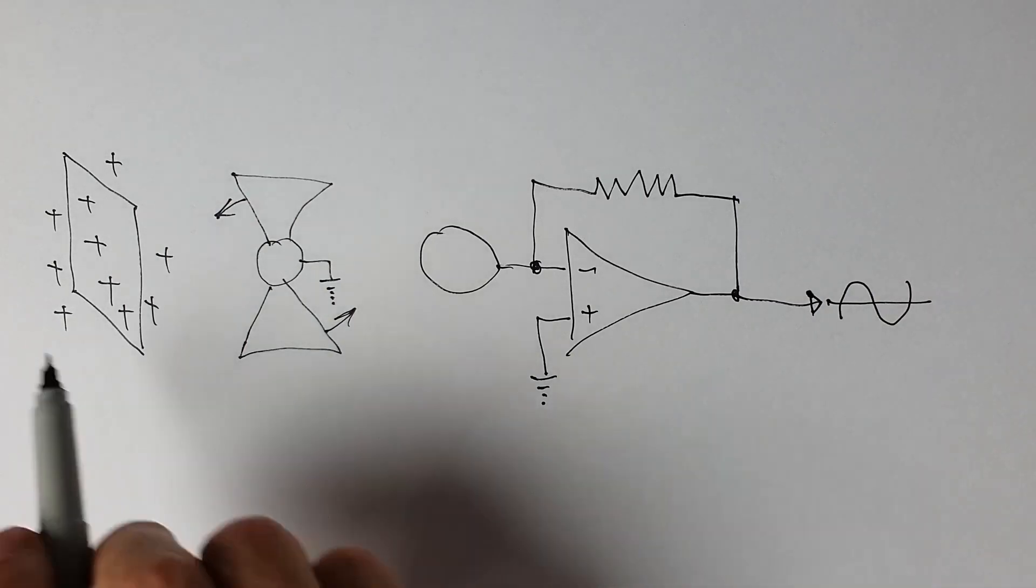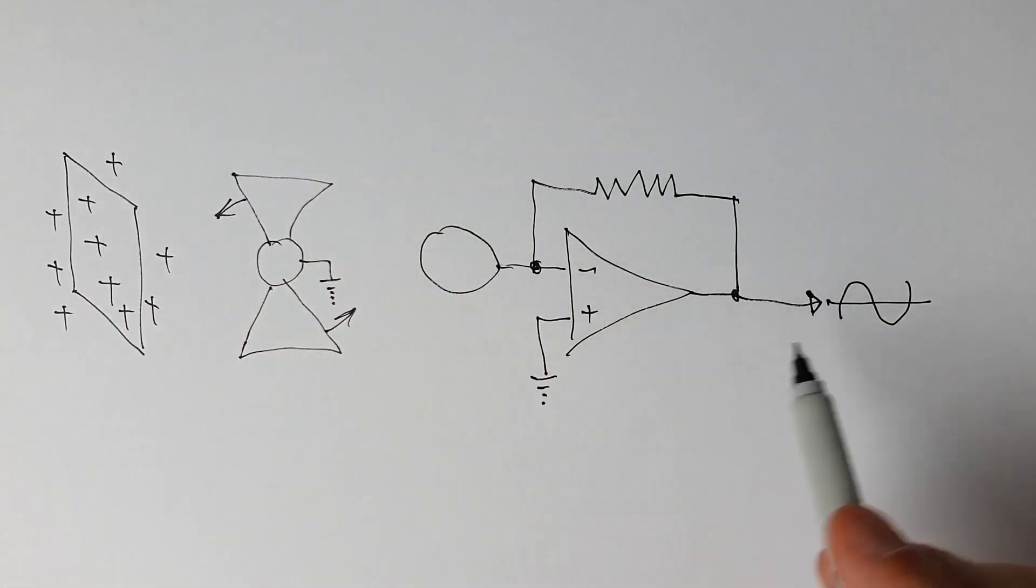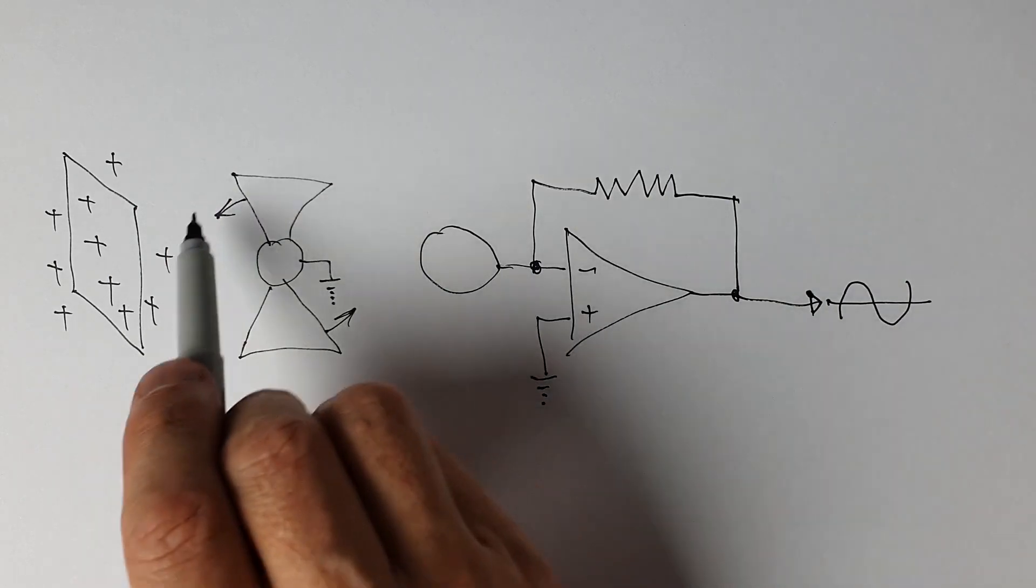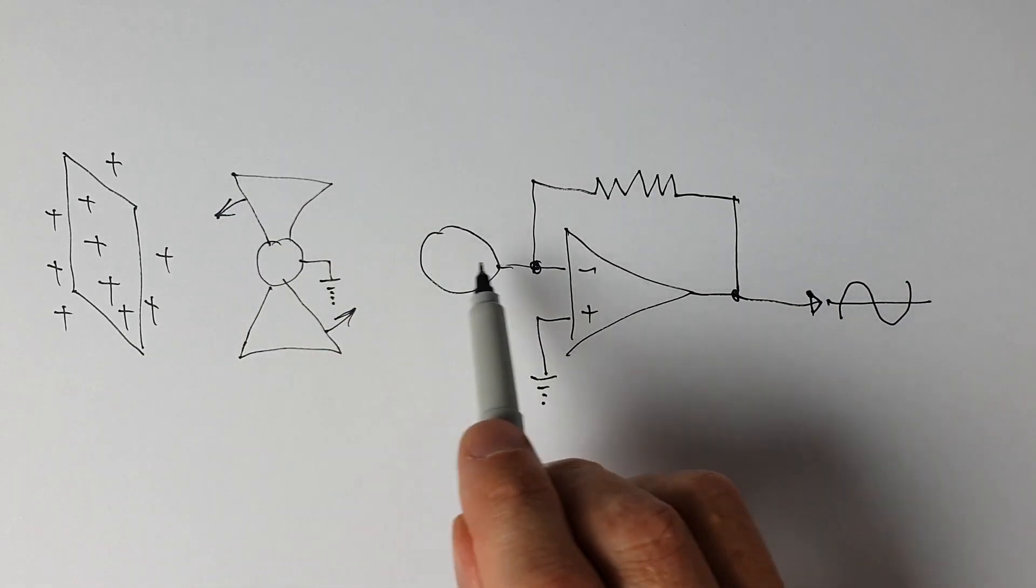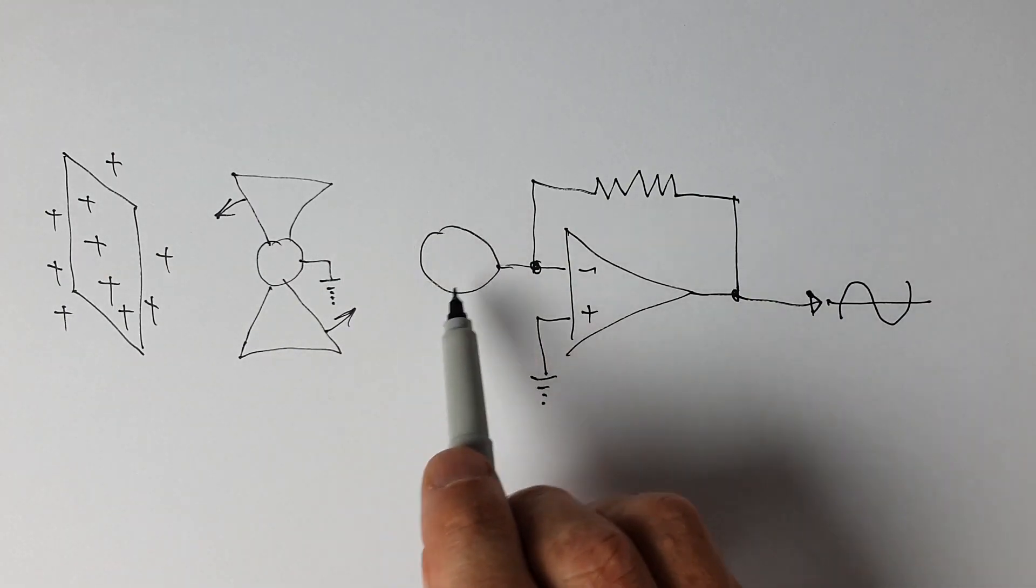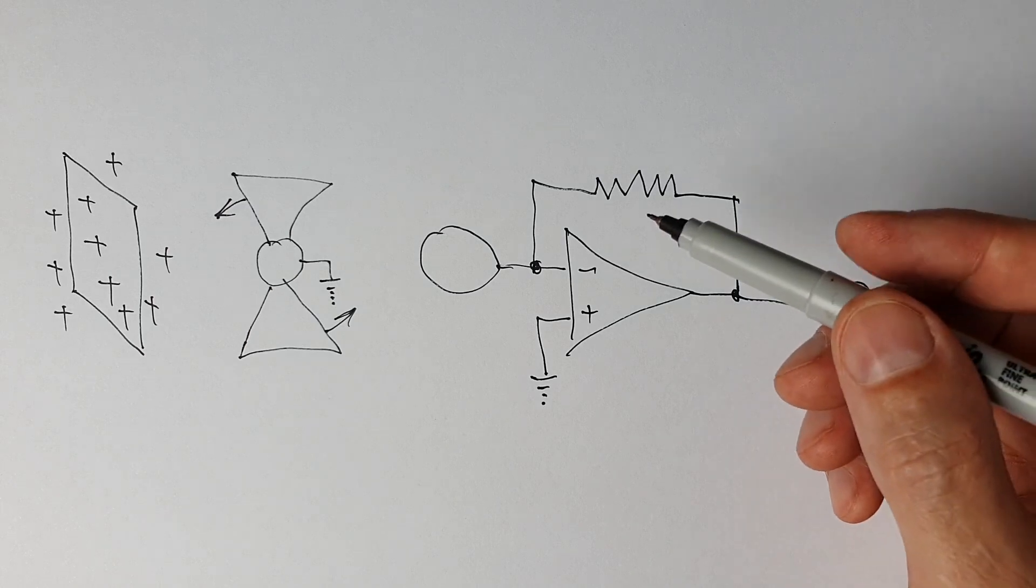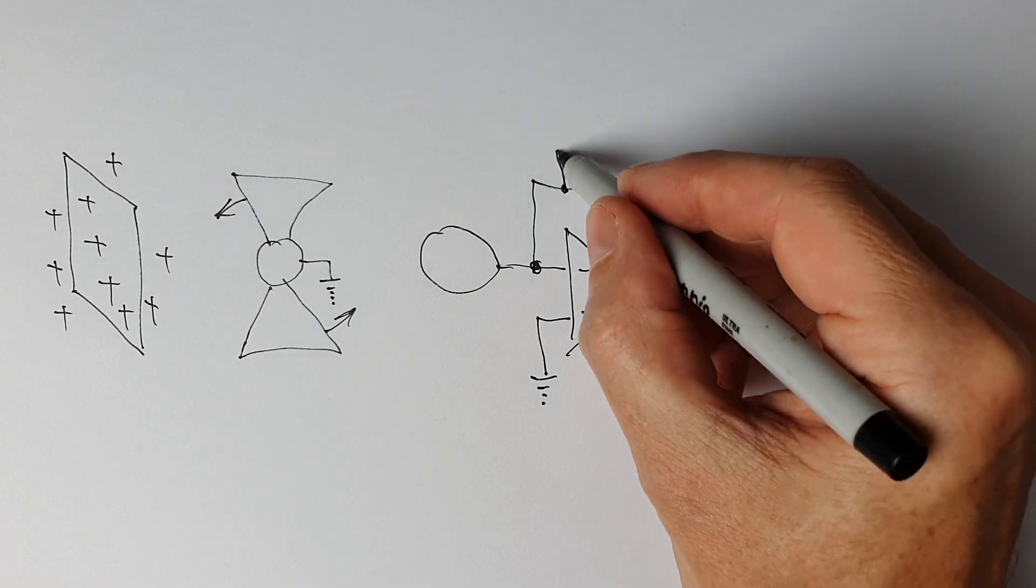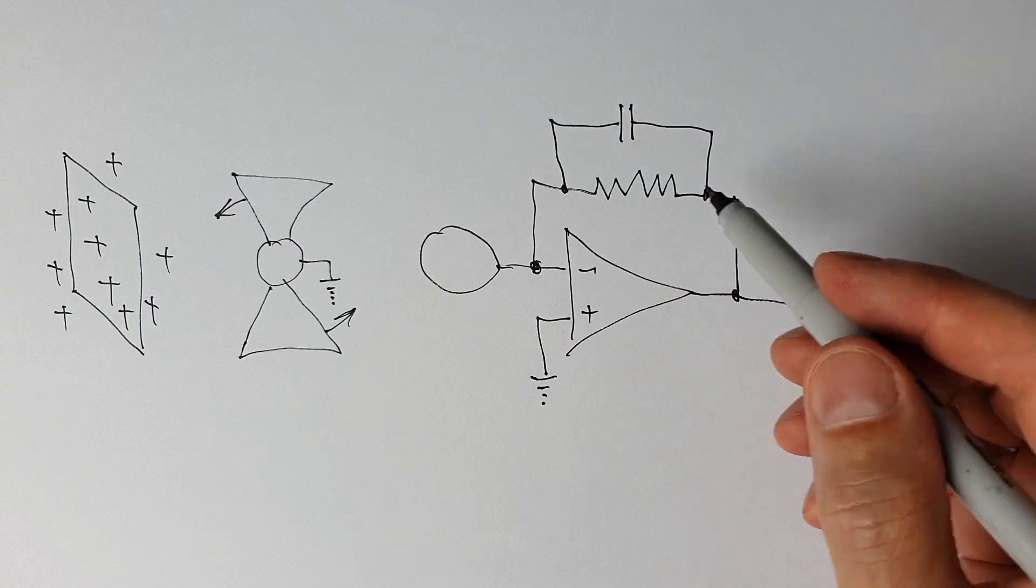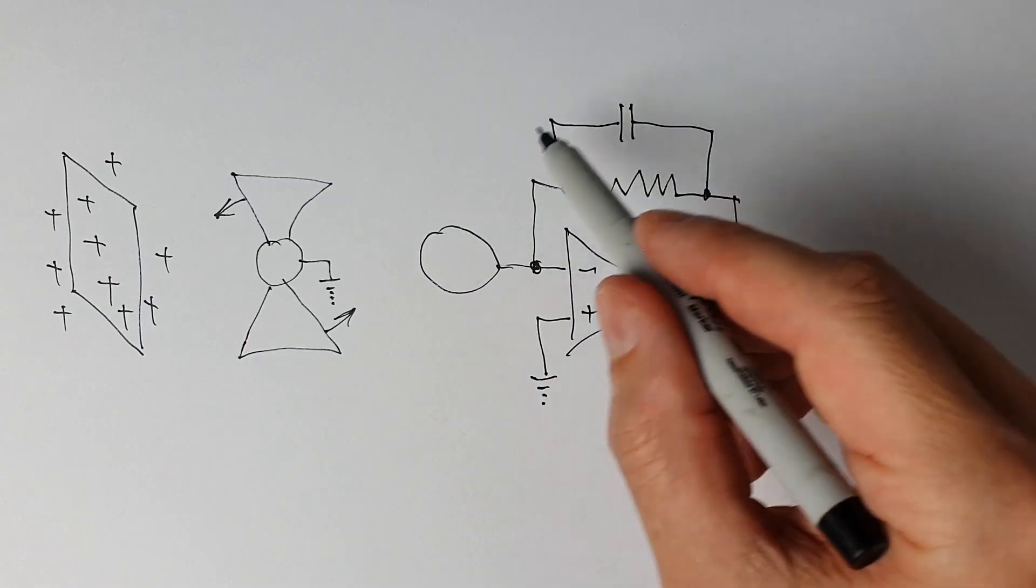So as this thing rotates this signal is synchronous to the rotation of this blade. And the signal is proportional to the electric field that impinges upon the sensing electrode. Now generally we like to put a capacitor across the feedback resistor which makes this a low pass filter.